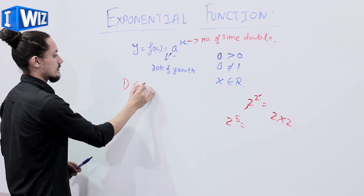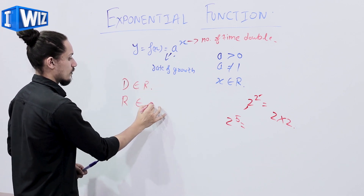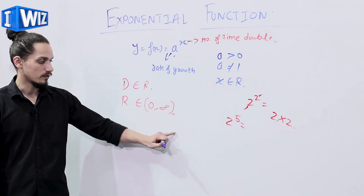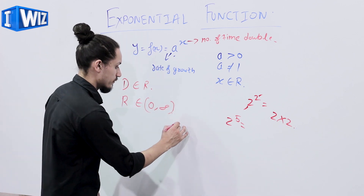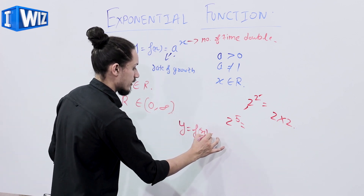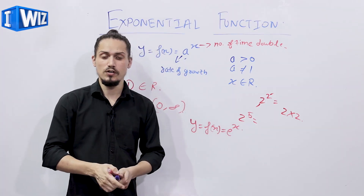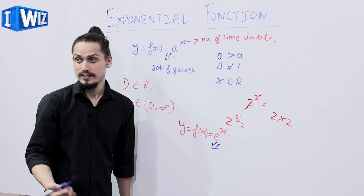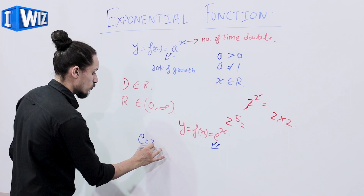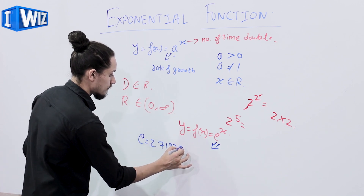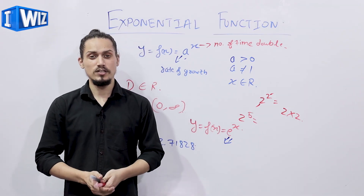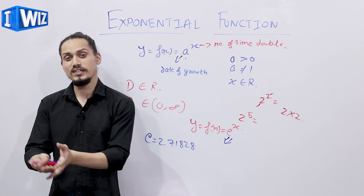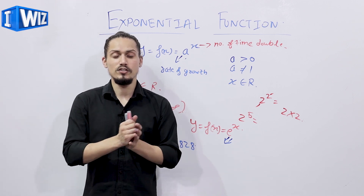Its domain lies in the real numbers and its range lies from zero to positive infinity. There is a special exponential function written as y = f(x) = e raised to power x. This is called the natural exponential function, where e is a numeric constant just like pi, and its value is equal to 2.71828. In simple words, exponential growth implies how a function grows or decays with respect to its own value.